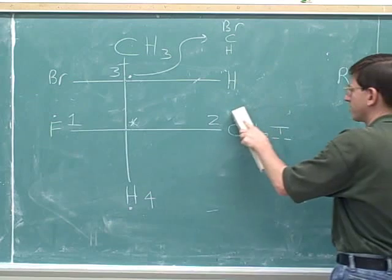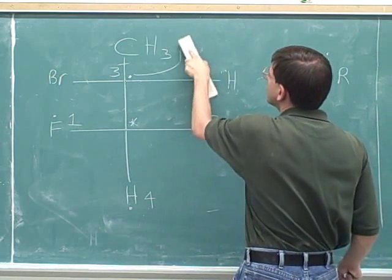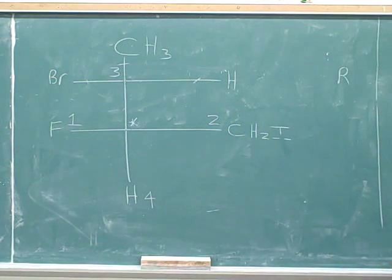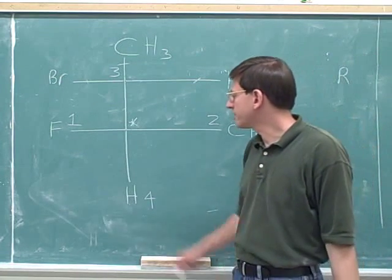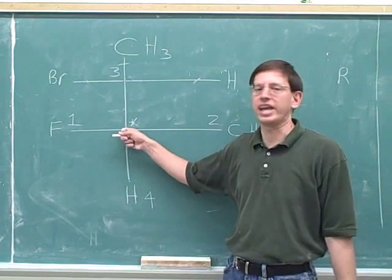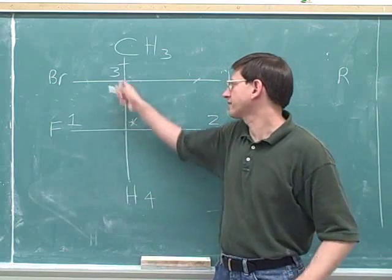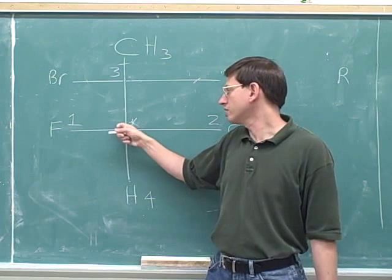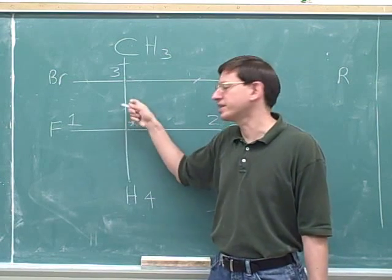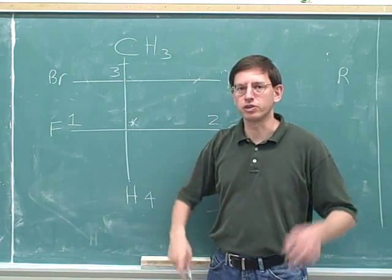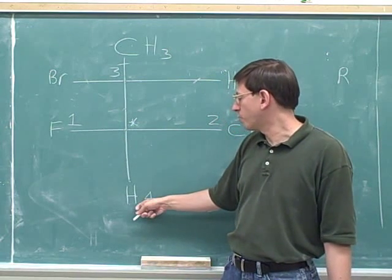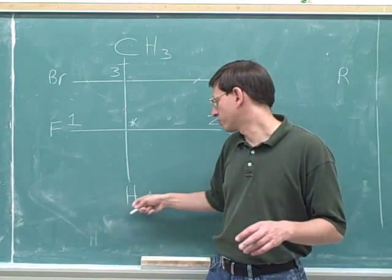Now we can erase our work for finding priorities. The number four priority is on the vertical line. The vertical line we always interpret as pointing away from the stereocenter, and that is not affected at all by the fact that there are two stereocenters here. When we focus on this carbon, we interpret both vertical lines as pointing away from this stereocenter. Since the number four is pointing away from us, there's no need to make any swap. We only make a swap when number four is not pointing away from us.